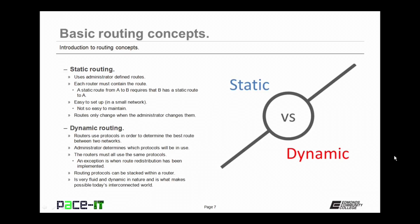First up is static routing. Static routing uses administrator-defined routes. Each router in a static routing configuration must contain the route. A static route from router A to router B requires that router B has a static route back to router A in order for two-way communication to take place. If router B didn't have one back to A, A could send traffic to B, but B could not send traffic back to A.